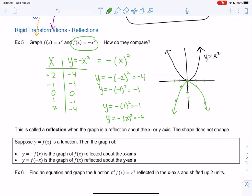This is called a reflection. It's when the graph is reflected about the x or y axis. So this one is reflected about the x axis because we folded the x axis. And this again goes under the rigid category because the shape does not change. So rigid just means the shape does not change. It just moves.